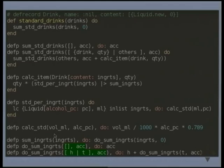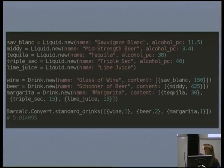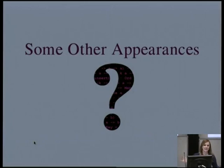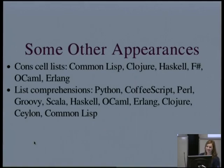This works — if we create a margarita, beer, and wine, and say we want one wine, two beers and one margarita, we get about five standard drinks based on those definitions. Where else have we seen list comprehensions? Python, Groovy, Scala, and others. The cons list pattern appears in quite a few places as well — certainly not limited to Elixir.